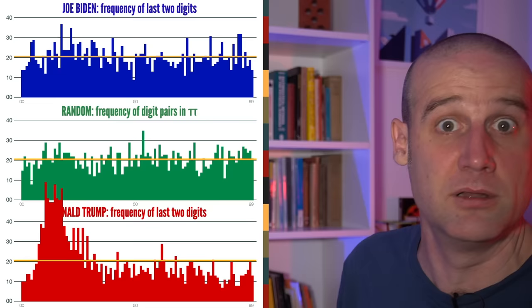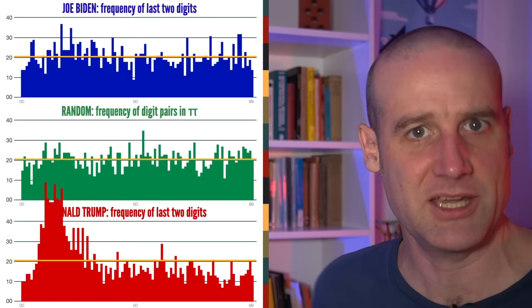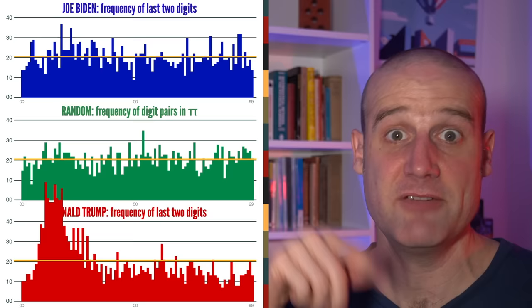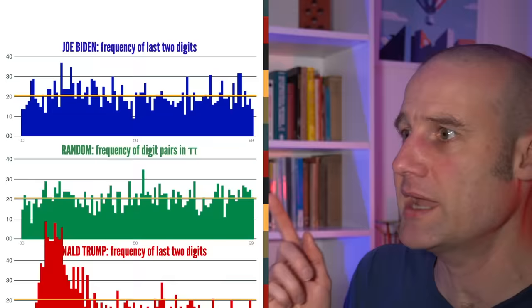So hang on. I would say if we're looking for evidence of weird election tampering, that is a ridiculous deviation from what we would expect. Well, it's a ridiculous deviation from what we would expect if we were to expect the last two digits to be random. Which is actually not what we should expect.